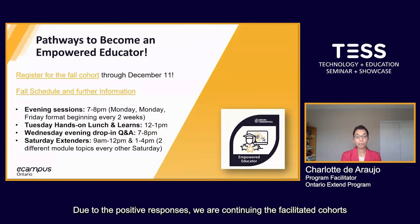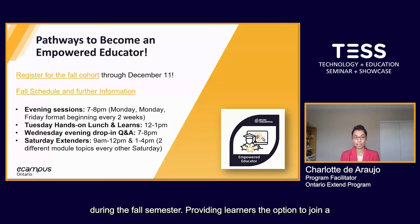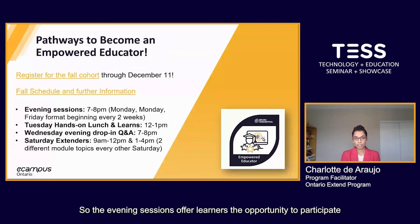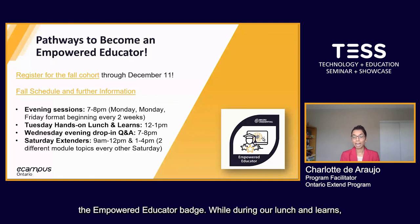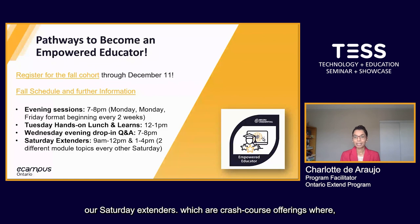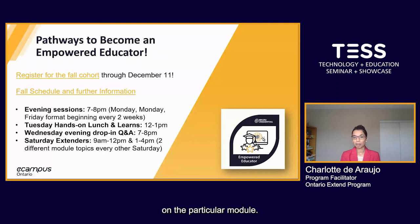Due to positive responses, facilitated cohorts are continuing during the fall semester, providing learners the option to join a community of practice. The flexible fall sessions are designed to fit learners' schedules, including evening sessions, hands-on lunch and learns, and Saturday extenders. Evening sessions offer synchronous facilitated learning over two weeks to achieve the Empowered Educator badge. Lunch and learns feature short bursts of learning focused on a couple of activities from the module of the week. Saturday extenders are crash course offerings where participants and facilitators focus together on a particular module.